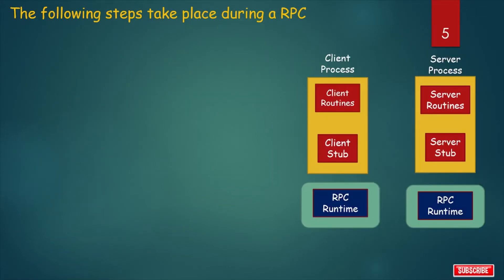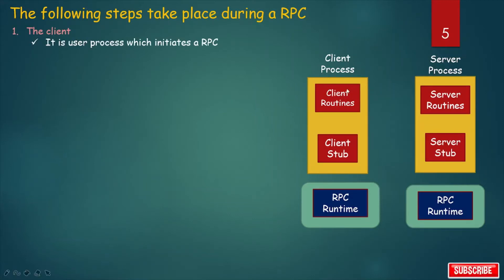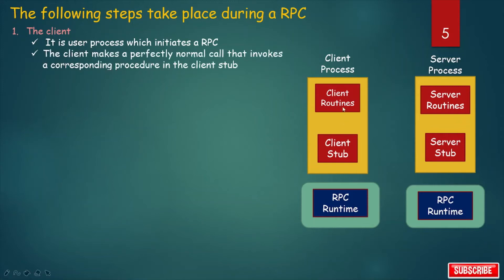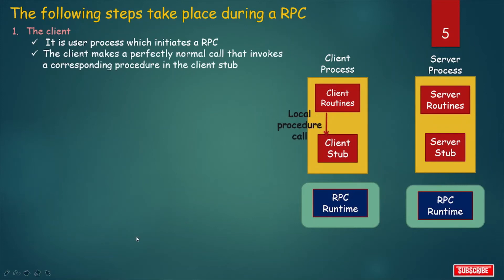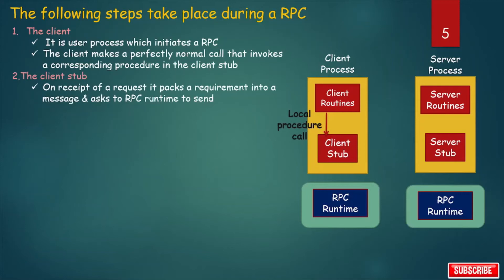The following steps take place during an RPC. First, the client — it is the user process which initiates an RPC. The client process initiates an RPC by making a perfectly normal call that invokes a corresponding procedure in the client stub. On receipt of a request, the client stub packs the requirement into a message and asks the RPC runtime to send it.